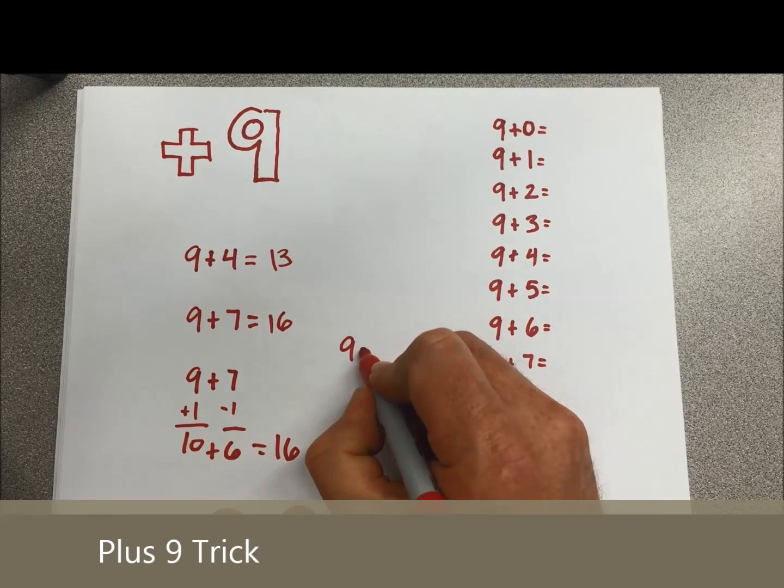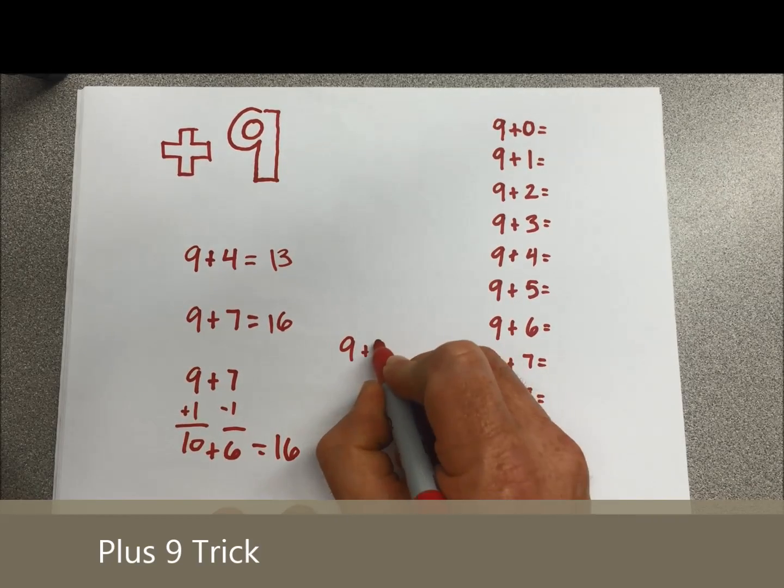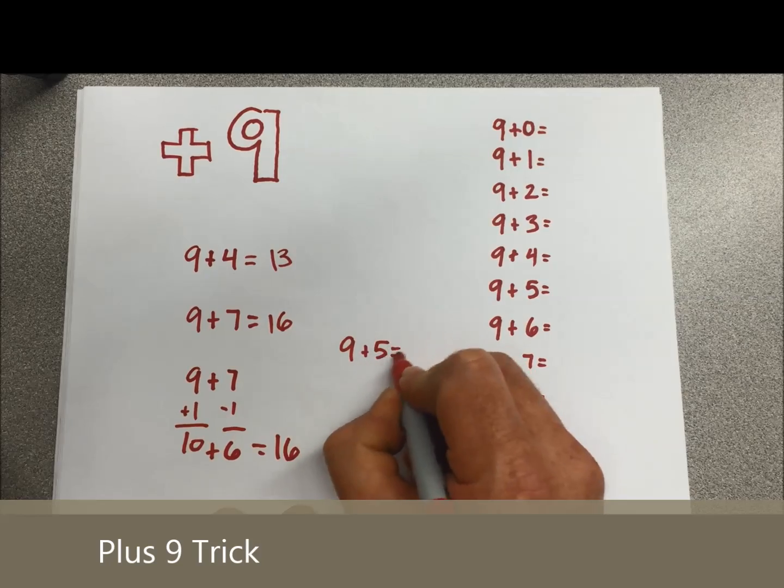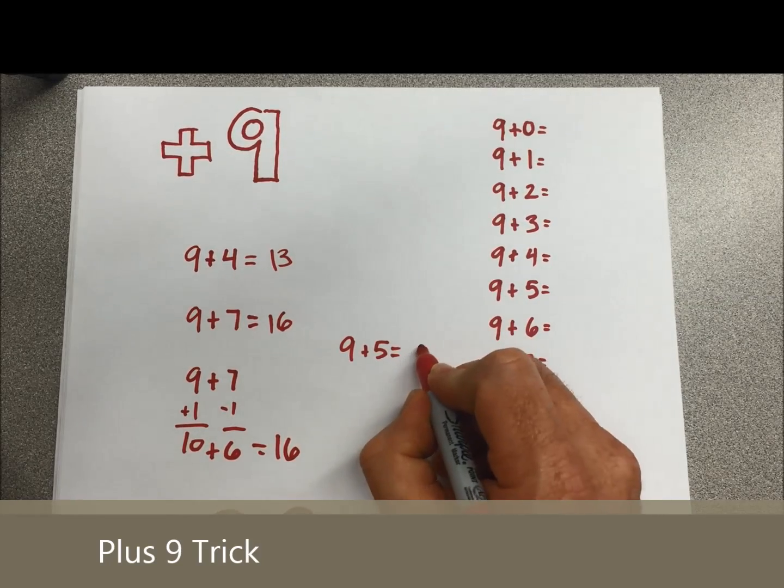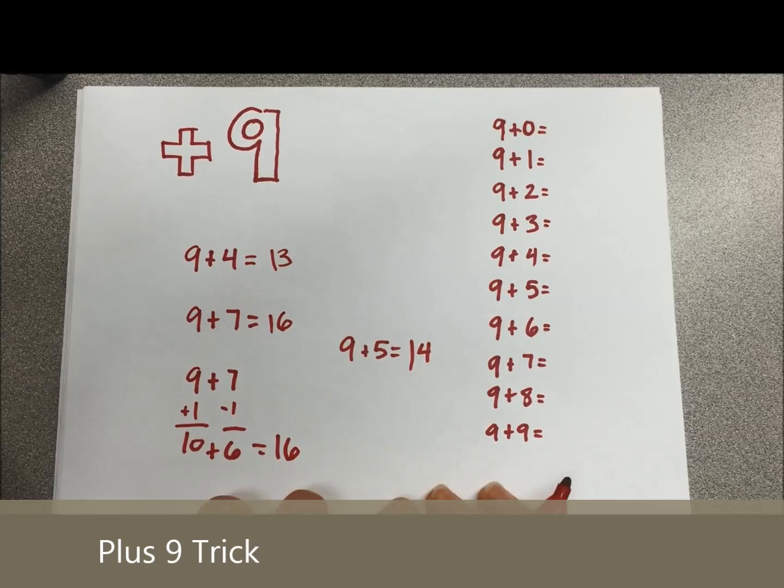Let's try one more just for fun and then we'll run through all of the plus 9. 9 plus 5, drop down 1 from 5 equals 4, slap a 1 in front, the answer is 14.